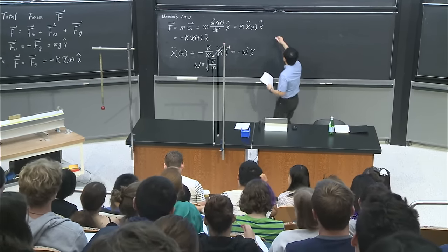Welcome back, everybody. We'll continue the discussion of the equation of motion: x-double-dot plus omega² x equals 0. There are three possible ways to write the solution. The first, as I mentioned before, is x(t) equals a cosine(ωt) plus b sine(ωt).